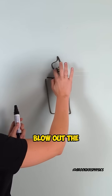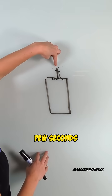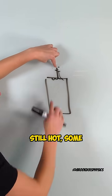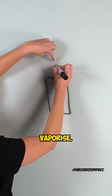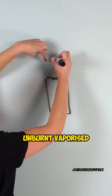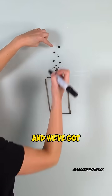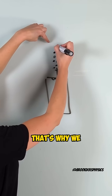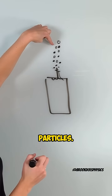But when you blow out the flame, this wick will still be hot for a few seconds after. So because it's still hot, some of that melted wax will still vaporize. So now what we've got is some unburnt vaporized wax and some unburnt carbon particles — and that's why we see the smoke, because of the unburnt carbon particles.